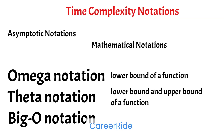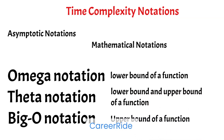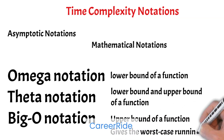Big O notation defines the upper bound of a function — that is, the maximum time taken by an algorithm, or the worst-case time complexity. Since it gives the worst-case running time of an algorithm, it is widely used, as most of us are always interested in the worst-case scenario. So the worst case is represented by Big O notation, and we will also be using Big O notation for our next topics.